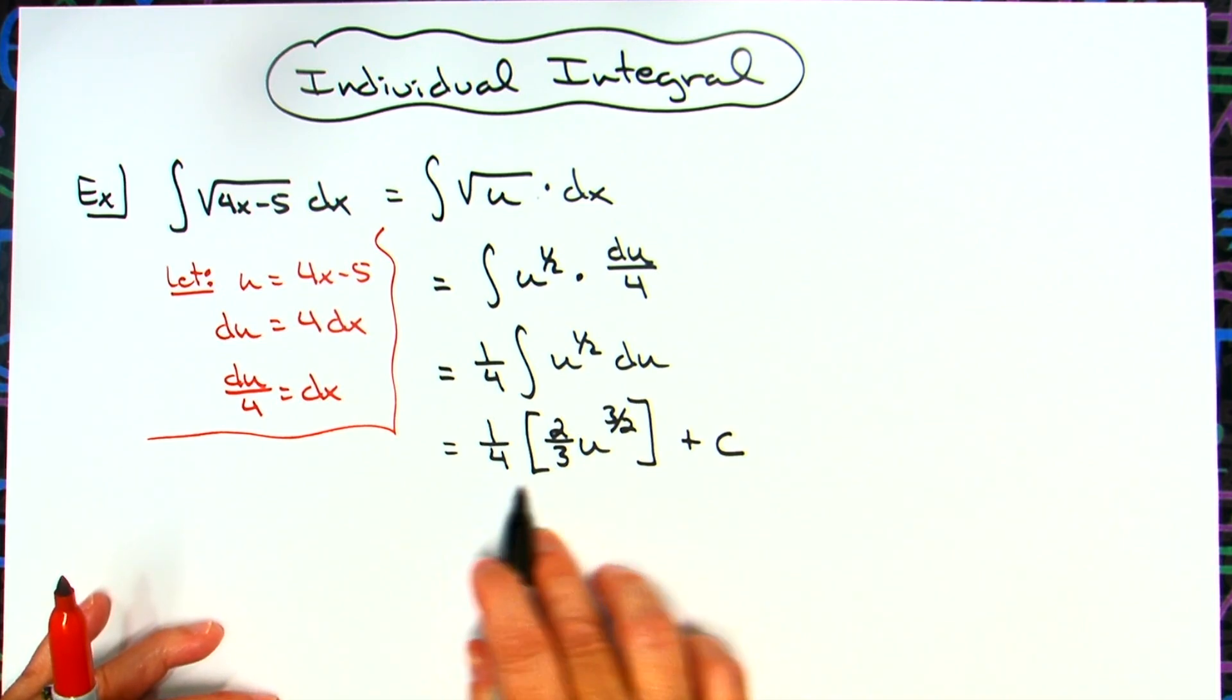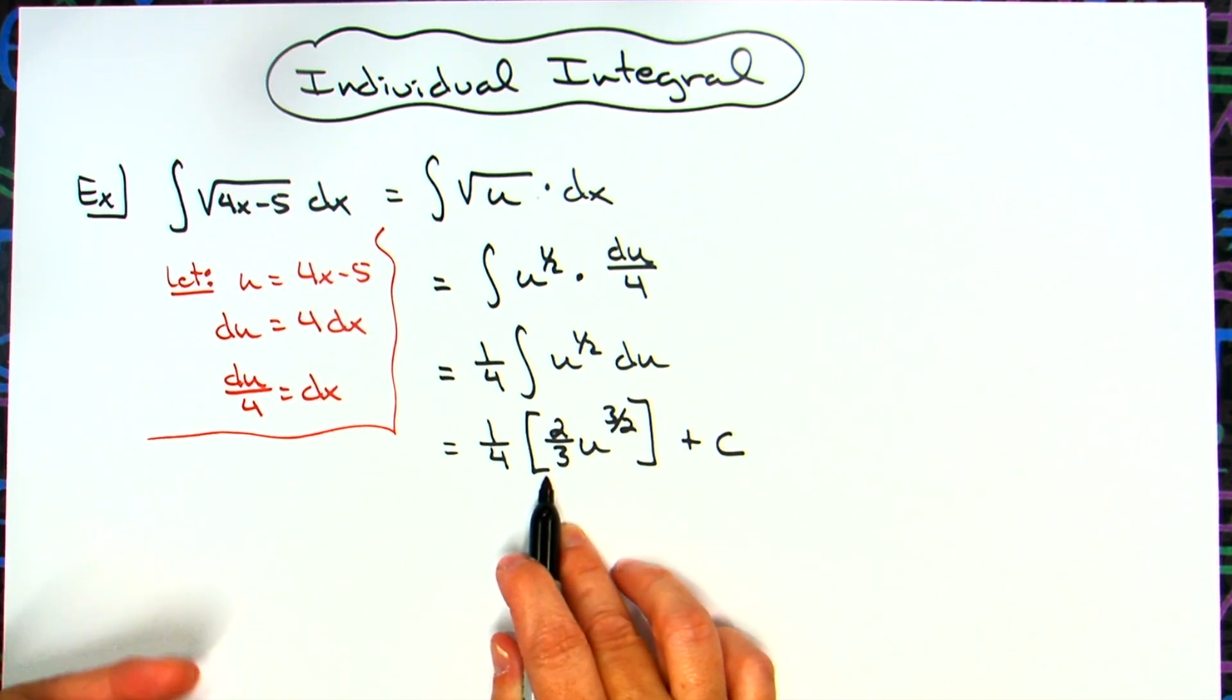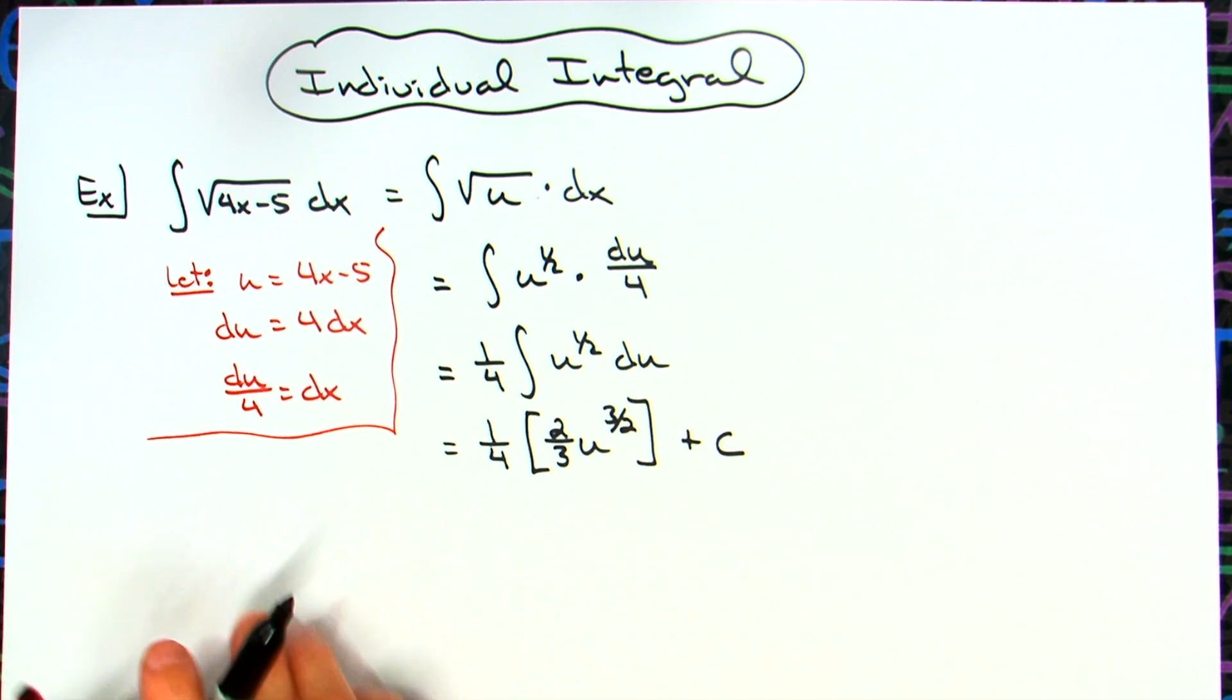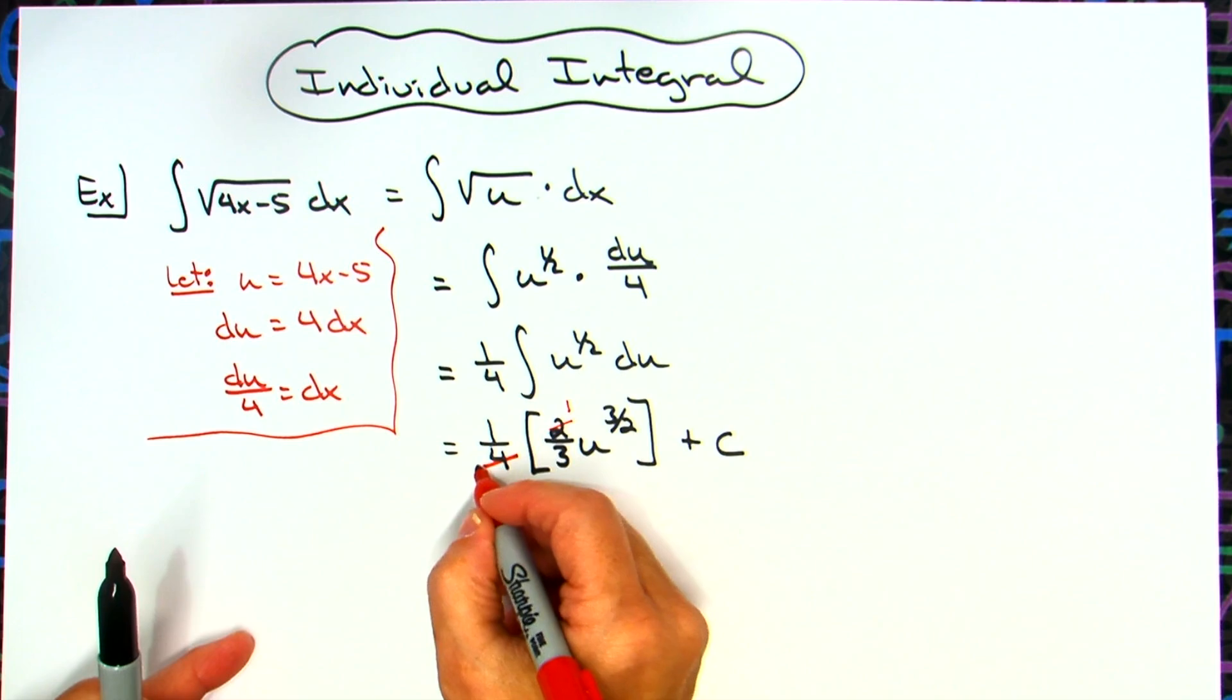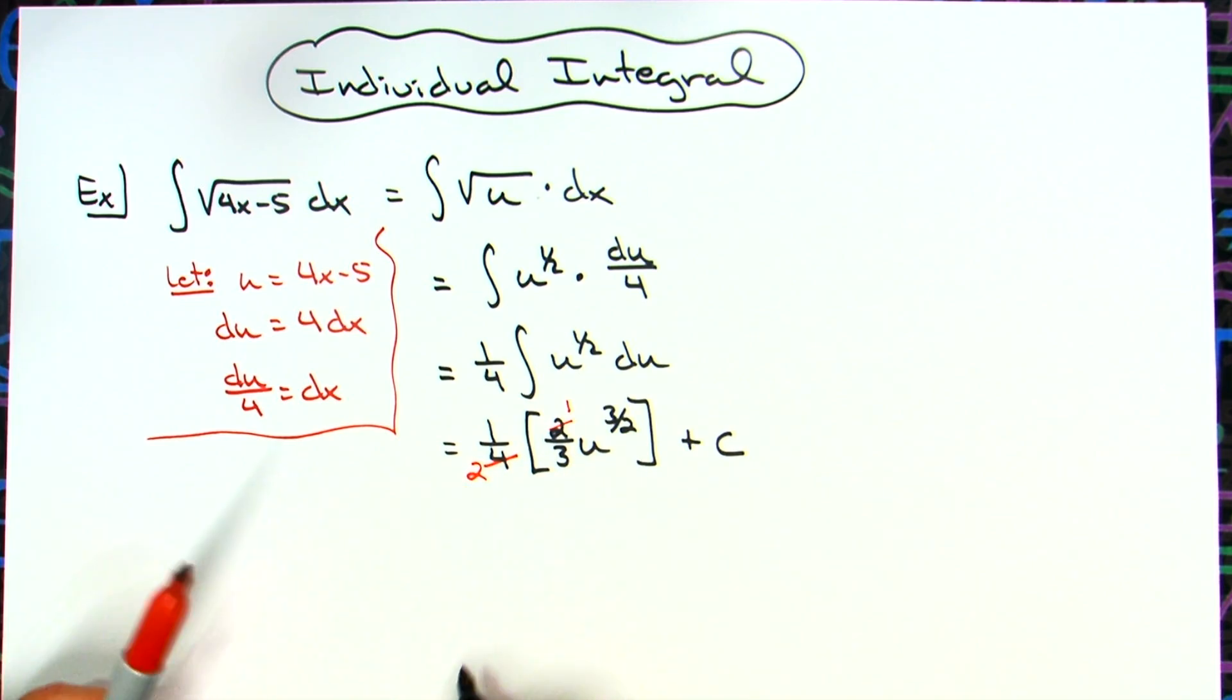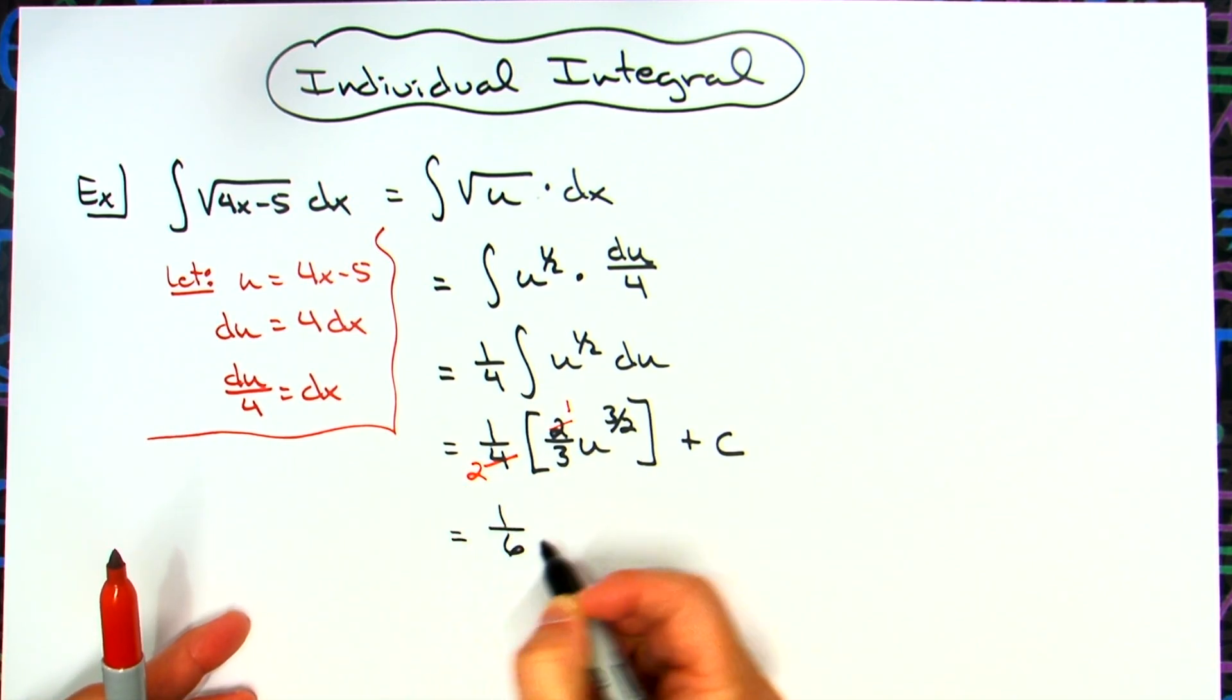We can go ahead and multiply this. If you wanted, you could even reduce it before you multiplied it. 2 goes into 2 one time, 2 goes into 4 two times. So you could reduce it before you do that. Then we'll be down to 1 over 6.